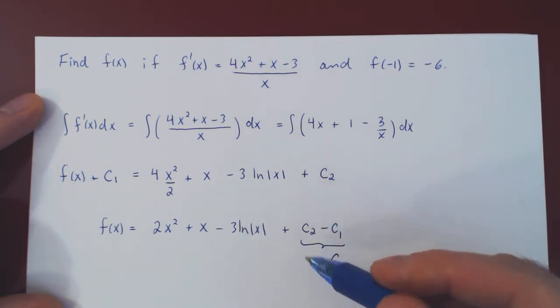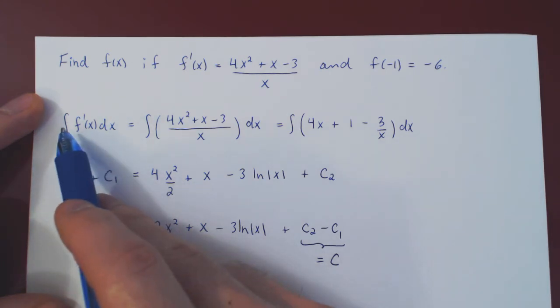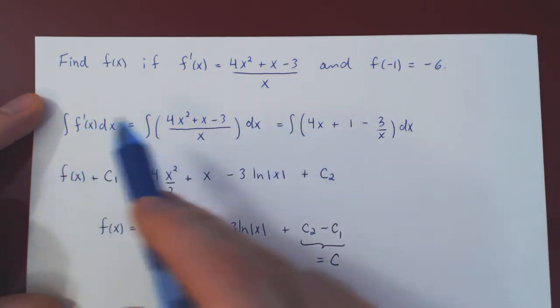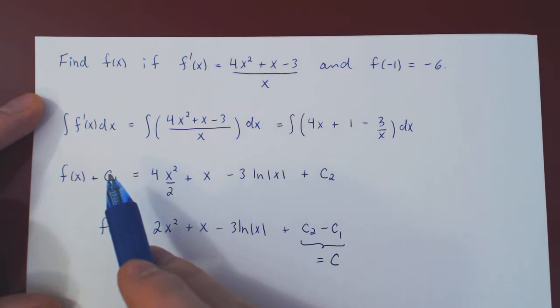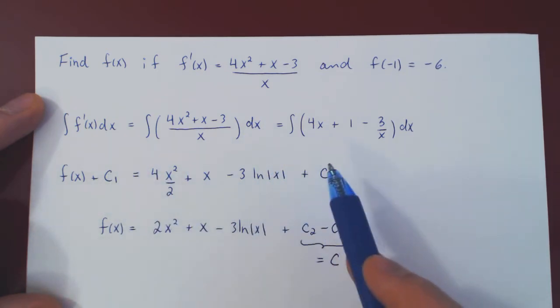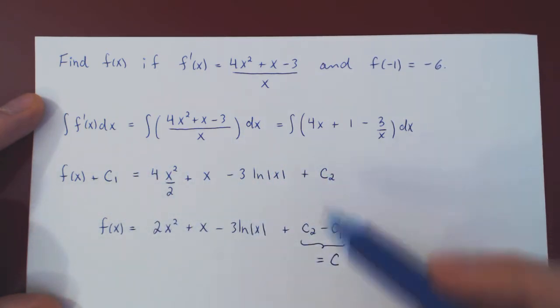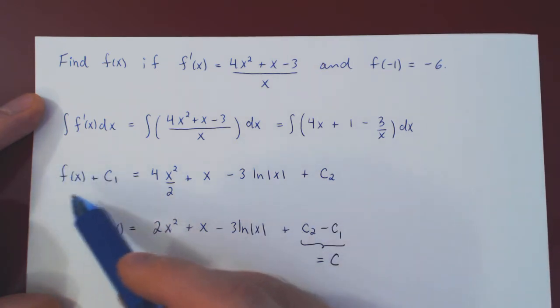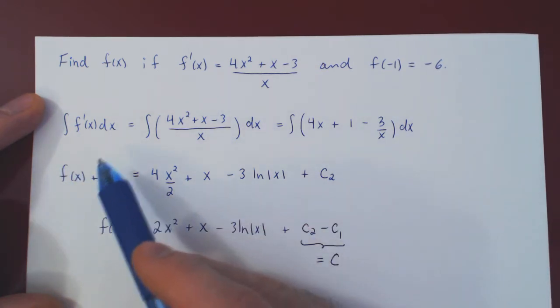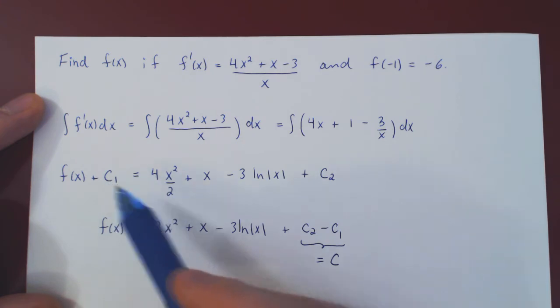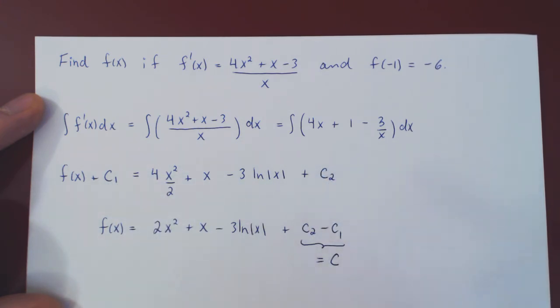And so the lesson here is, when you have an equality between two indefinite integrals, you do not need to add two constants on both sides. You can just add one constant on either side. And here, since we were solving for f, naturally, we would ignore this constant and only add a constant on the right-hand side.